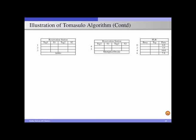For simplicity, all instructions read from and write to the register file only — no memory reads or writes. The floating point register file FLR has registers initialized as: R0 = 6, R2 = 3.5, R4 = 10, R8 = 7.8.